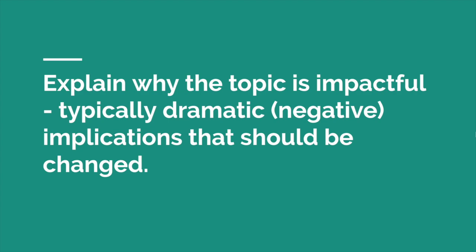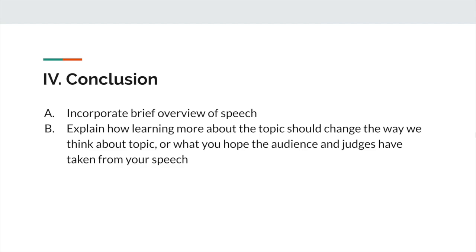Finally, with the conclusion, you just want to find a way to incorporate a brief one-sentence overview of the speech, calling back perhaps a funny or memorable part that forces the judge to think back through the speech again. Then you want to typically explain how learning more about your topic can change the way we think about it. In the intelligence speech, Ronan ends on a point of asking us to reconsider what we view as intelligent. In the label speech, that speaker ended on a note of urging us to resist labels that might be problematic, like the caste system labels. It's good to end on a call to action or urging your audience to think about the topic in a slightly different way.